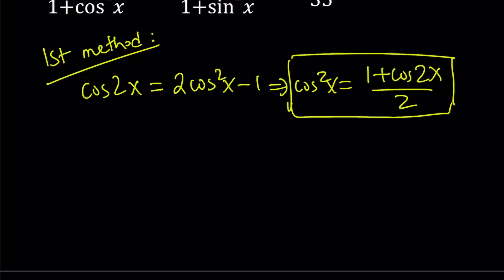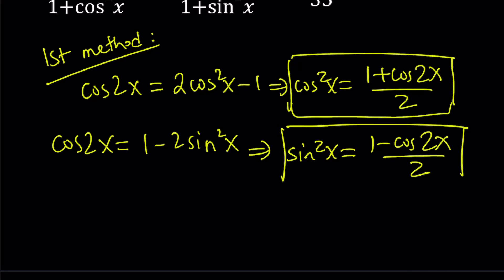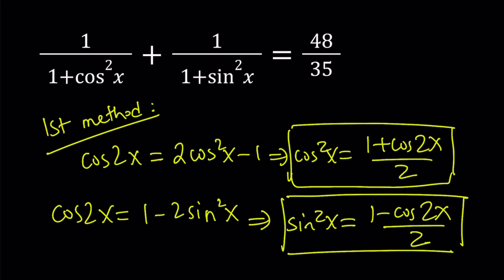Let's do the same thing for sine squared. That comes from cosine 2x equals 1 minus 2 sine squared x, so sine squared x can be written as 1 minus cosine 2x divided by 2. Now the plan is to substitute these into the equation, simplify the left-hand side, and solve for cosine of 2x.